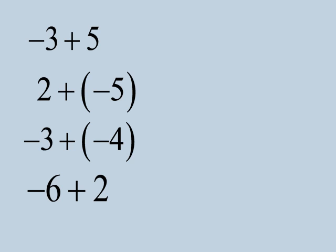So now let's look at all of the problems we've done. Negative 3 plus 5 was equal to 2. 2 plus negative 5 was equal to negative 3. Negative 3 plus negative 4 was negative 7. And negative 6 plus positive 2 was negative 4. And what I want to look at is what happens.